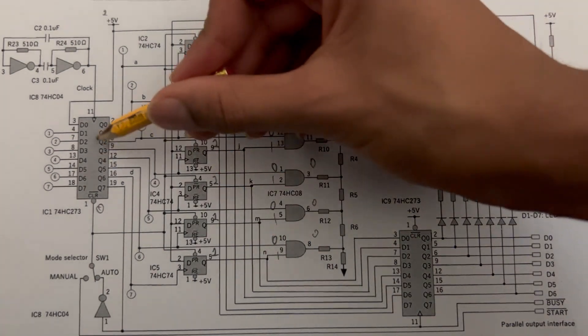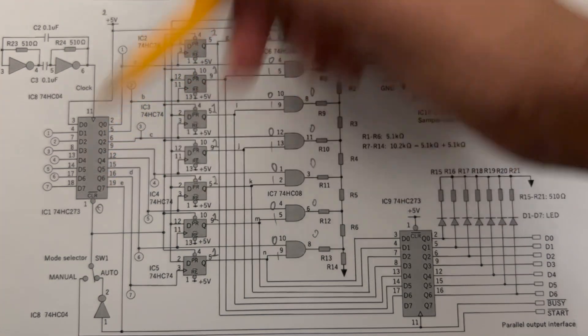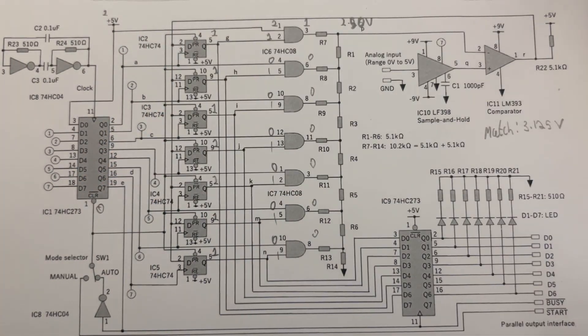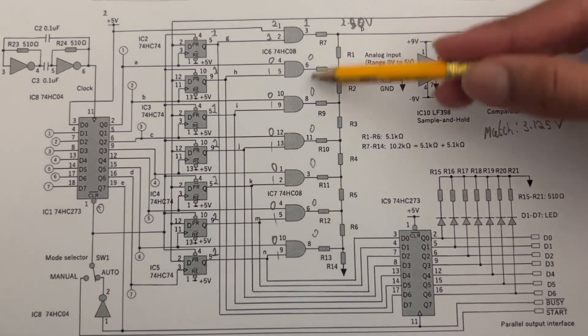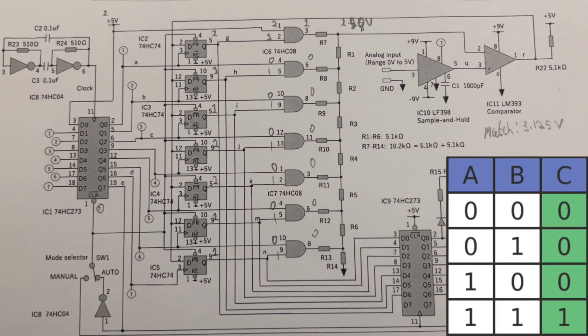Because all the Qs in the 74HC273 are low, as they've all been cleared, making these gates have one low input. Thus, through NAND logic, the outputs of these will be low. Here's a refresh on NAND logic, should you need it.